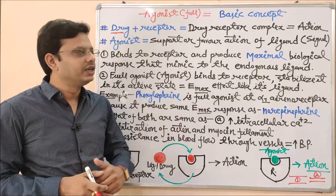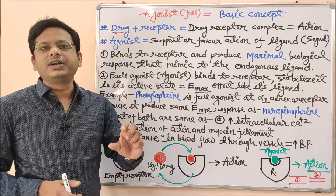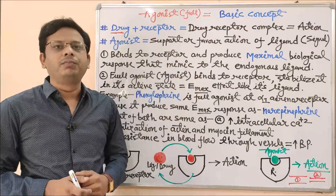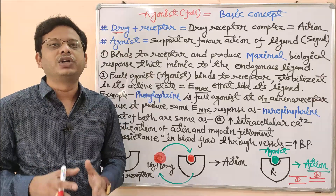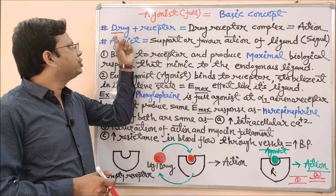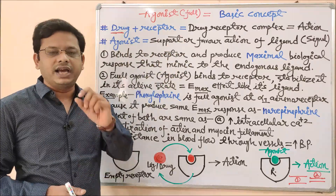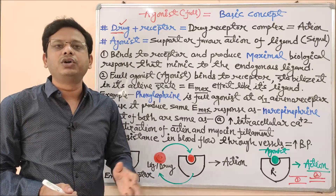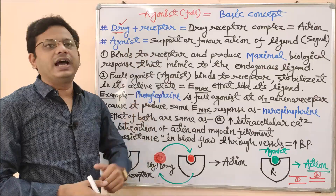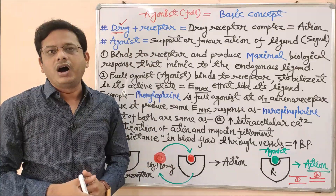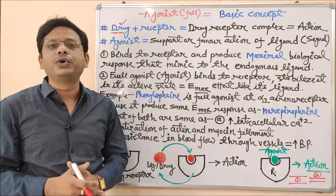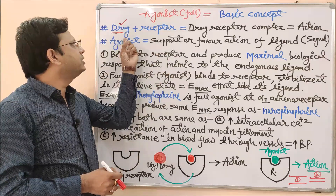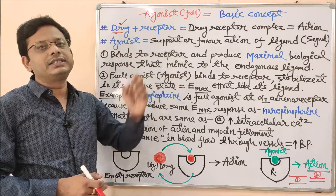Whenever any drug combines with the respective receptor, there is formation of a drug-receptor complex, and only then will they produce their desirable biological or pharmacological activity. In this equation: drug + receptor = drug-receptor complex. A drug alone cannot produce any activity, and an unoccupied or empty receptor is also of no use — it will not produce any kind of response. So the necessary condition is the presence of both drug and receptor for complex formation.